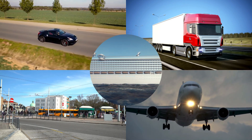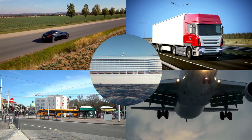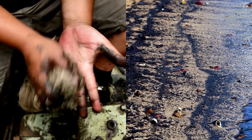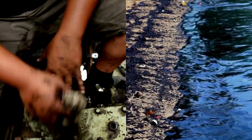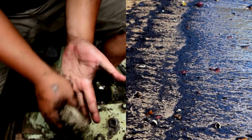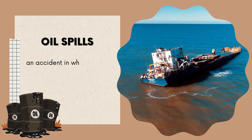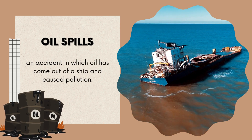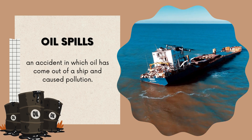Vehicles rely on fuels like gasoline and diesel to operate. Sometimes, when it rains, water washes away pollutants present on roads — such as oil, gasoline, and debris. This runoff flows into storm drains, which eventually lead to rivers and lakes. Or an accident in which oil comes out of a ship, known as oil spills, can contaminate oceans, making it harmful for plants, animals, and even humans.